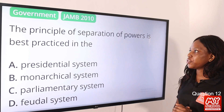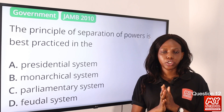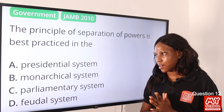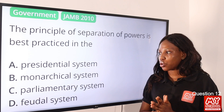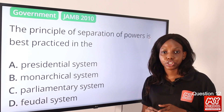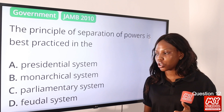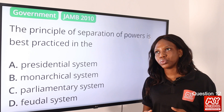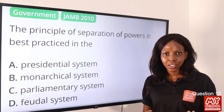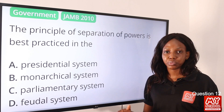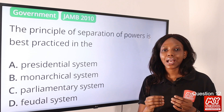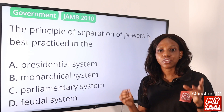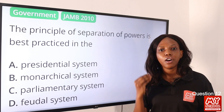Question 12: The principle of separation of powers is best practiced in the — option A, presidential system; option B, monarchical system; option C, parliamentary system; option D, feudal system. The answer is presidential system. The presidential system features the legislative, the executive, and the judiciary. The monarchical system is ruled by a king or queen. The feudal system is one where workers or peasants receive lands in return for their service to the king. Powers are separated among the legislative, executive, and judiciary to ensure effective performance of each organ of government. So option A is the final answer.